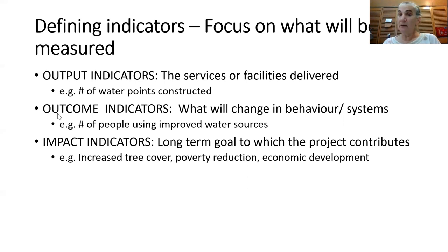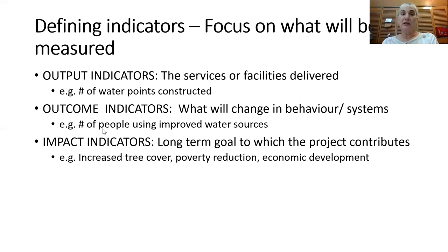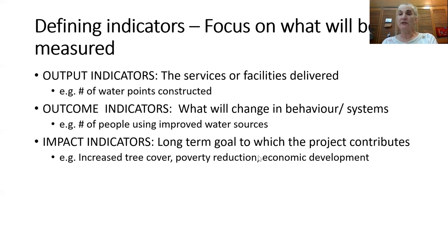You can have outcome indicators — these are the changes that have resulted from the outputs of your activities. These can be changes in behaviors or systems, such as the number of people who are now using improved water sources. And then there are impact indicators — what's happening for the long-term goal of the project. These larger long-term indicators would be for something like increased tree cover for an area, poverty reduction, or economic development.